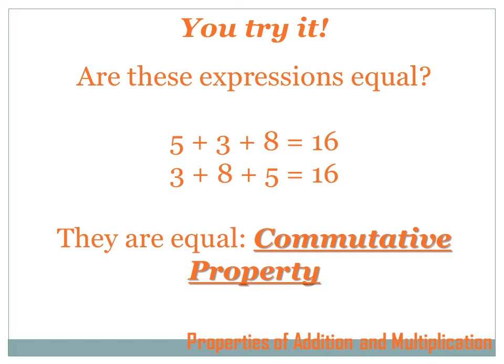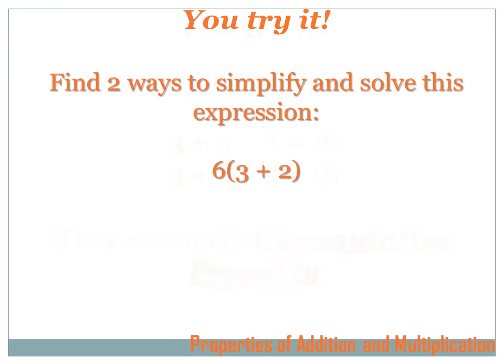Those are equal based on the commutative property. Now find two ways to simplify and solve this expression: 6 times parentheses 3 plus 2. When you finish, hit the forward arrow and go to the solution.